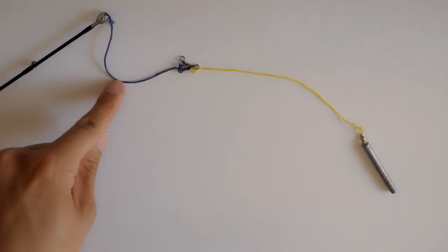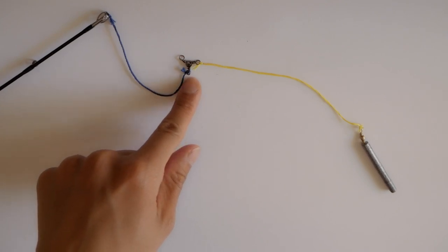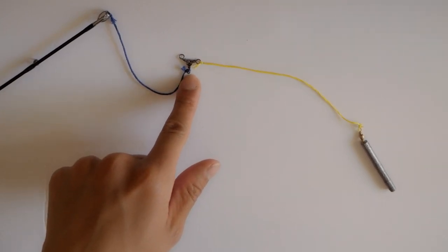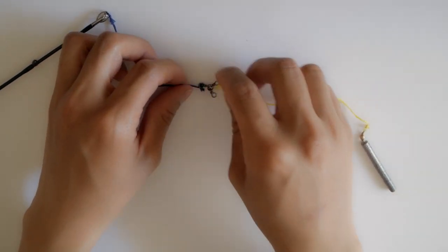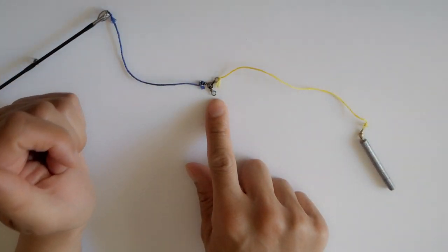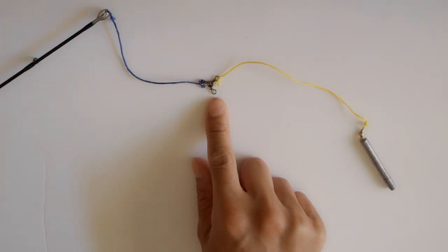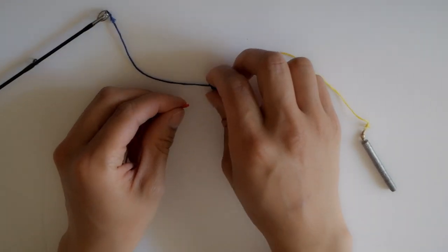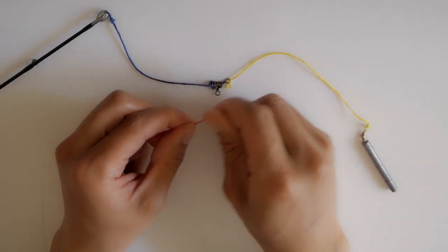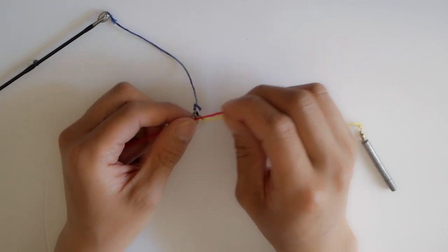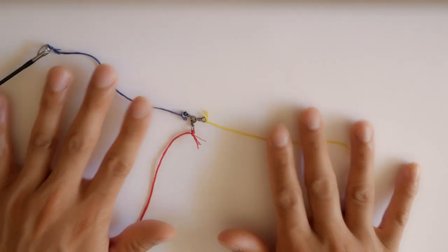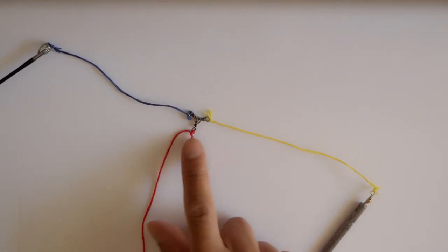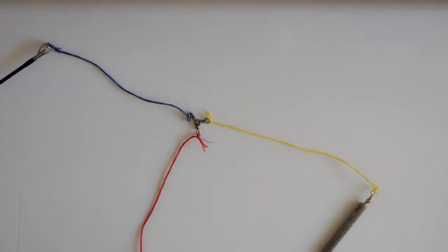So now we have your weight attached to the monofilament line to your three-way swivel here, and also the main line coming from your spool to the three-way swivel. We only have one eye left and this is going to be for our monofilament leader which we tie the two flies on. So again I'll just use a simple clinch knot or improved clinch knot, whatever you choose.